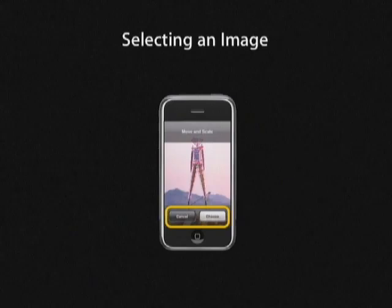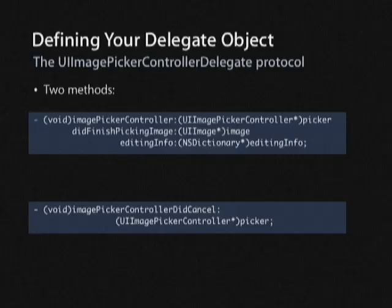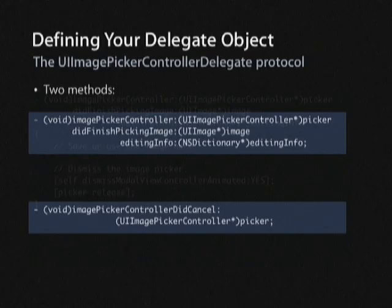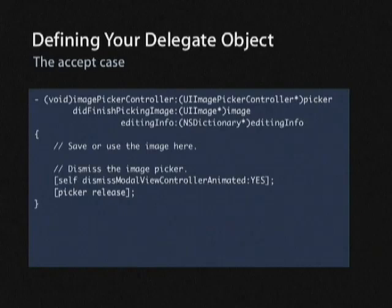Once presented, the user gets an image. After they take a picture they have two options: cancel or choose. These map directly to the two delegate methods: imagePickerController:didFinishPickingImage:editingInfo: and imagePickerControllerDidCancel:. If the user selects choose, you get a UIImage object back — that's the actual image the user selected.